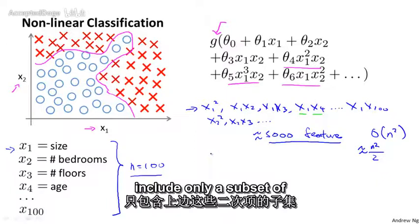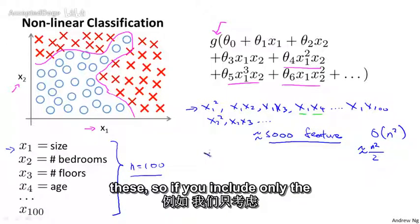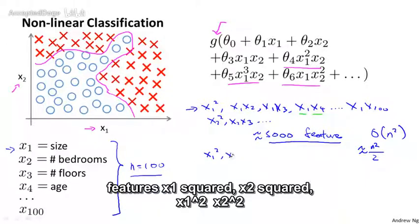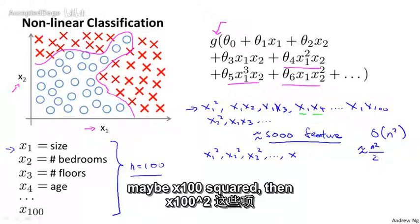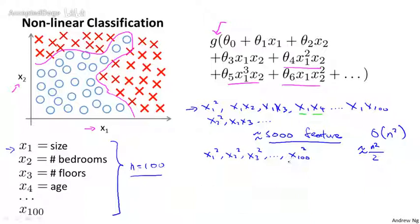One thing you could do is include only a subset of these. So if you include only the features x1 squared, x2 squared, x3 squared, up to maybe x100 squared, then the number of features is much smaller. Here you have only 100 such quadratic features.